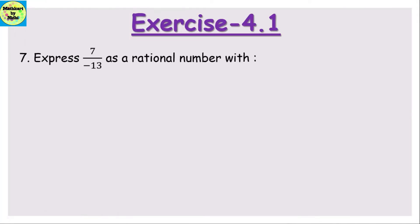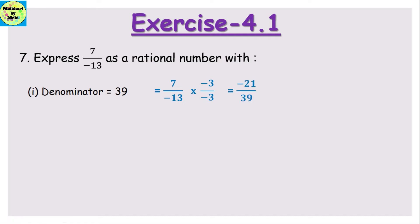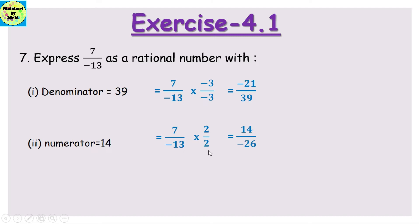Question number 7: express 7/(-13) as a rational number with denominator 39. We multiply -13 by -3 to get positive 39. So 7 × (-3) = -21 and (-13) × (-3) = 39, giving -21/39. For the second part, numerator is 14: we multiply 7 by 2, so the new denominator is -13 × 2 = -26, giving the answer 14/(-26).